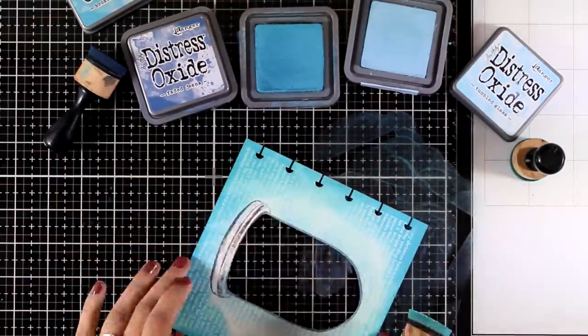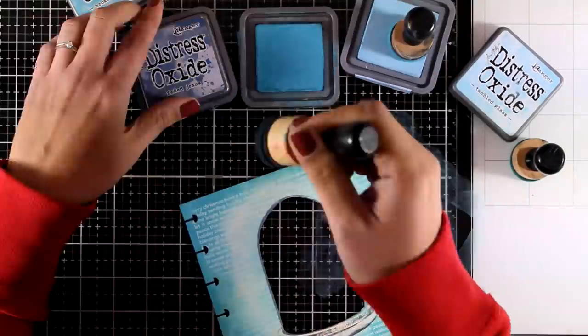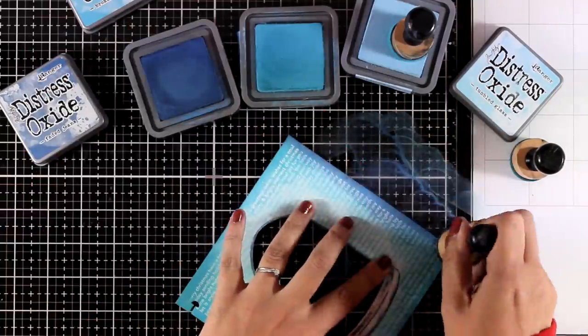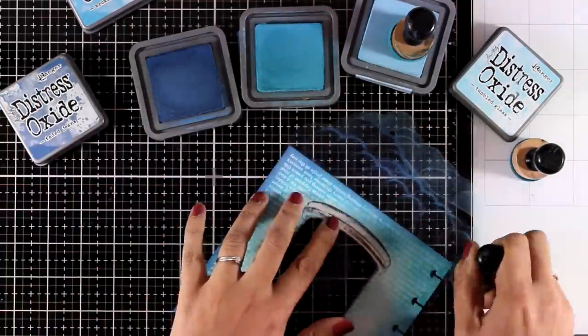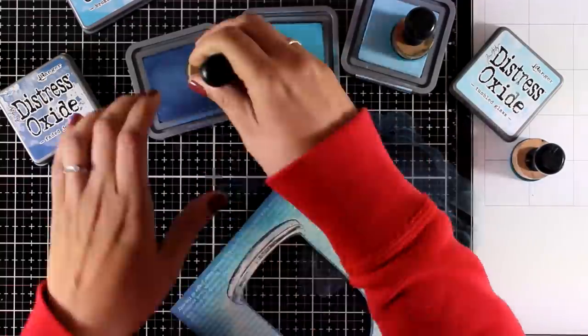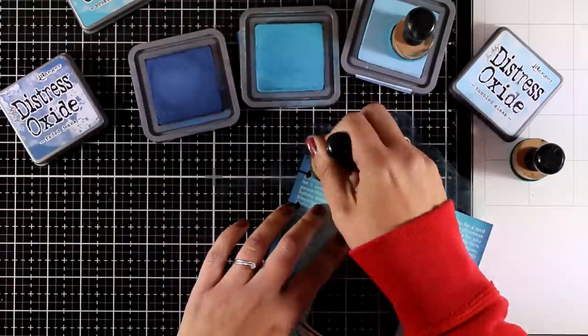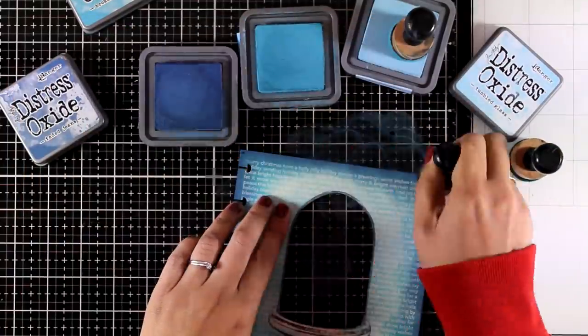So I'm using three colors here. The lighter is tumbled glass, I go to broken china, and I will finish it off with my darker shade which is faded jeans. And I always like to add the darker shade at the edges since I feel like it is framing nicely my project.